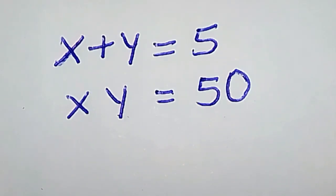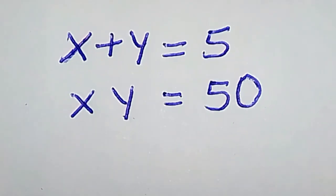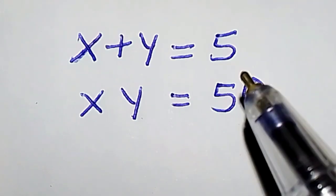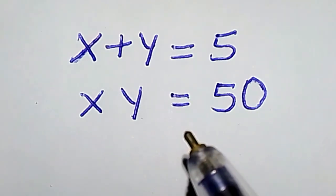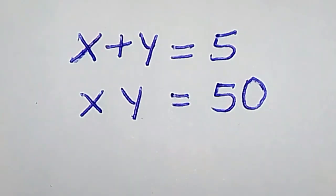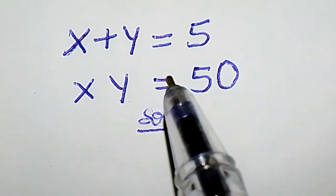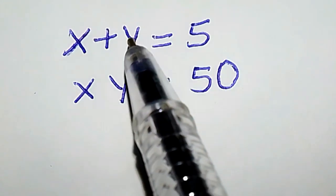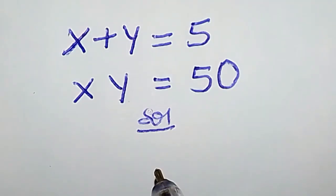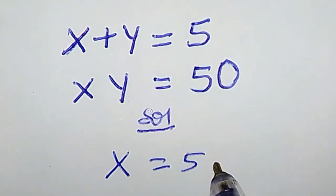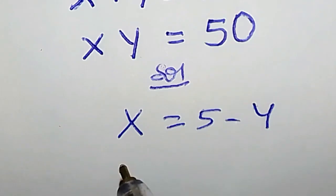In this video we are going to be solving a nice algebra problem: x plus y equals 5, and x times y equals 50. How do we solve for x and y? From the first equation, if we move y to the right hand side, we are going to have x equal to 5 minus y.